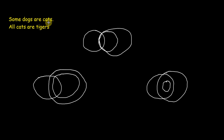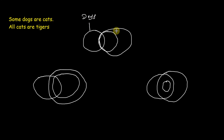So the statements are: some dogs are cats, and all cats are tigers. Suppose this circle is for dogs and this circle is for cats. Now, all cats are tigers — so what do we do?